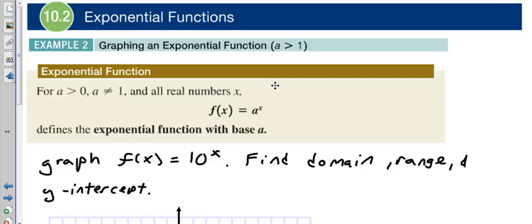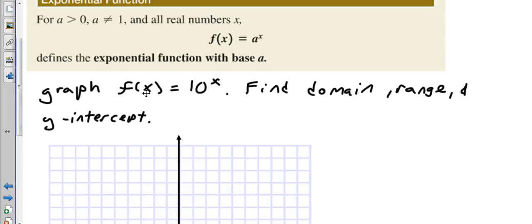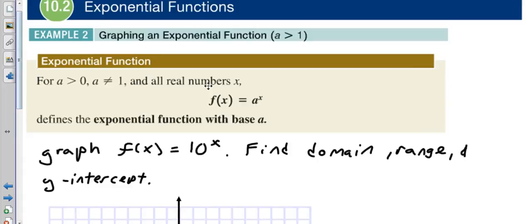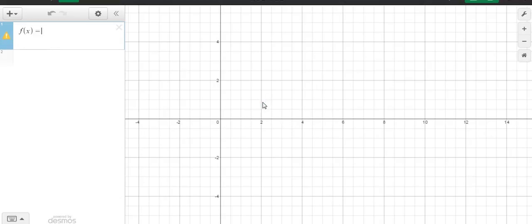Specifically, we're going to be graphing f(x) = 10^x and then find its domain, range, and y-intercept. Let's first explore what a^x even looks like when a is greater than zero, and even specifically when it's two, three, four, five, six, and even bigger than ten. Let's explore what that's going to look like and that may help us figure out what we're looking at here.